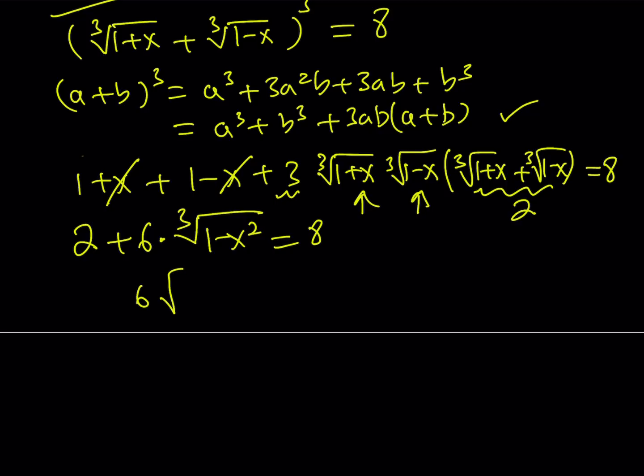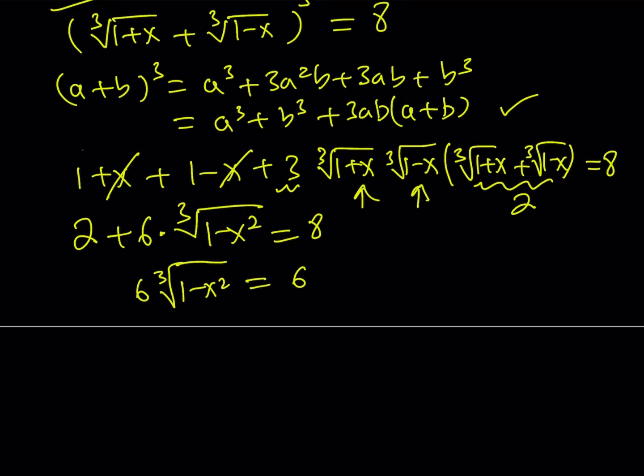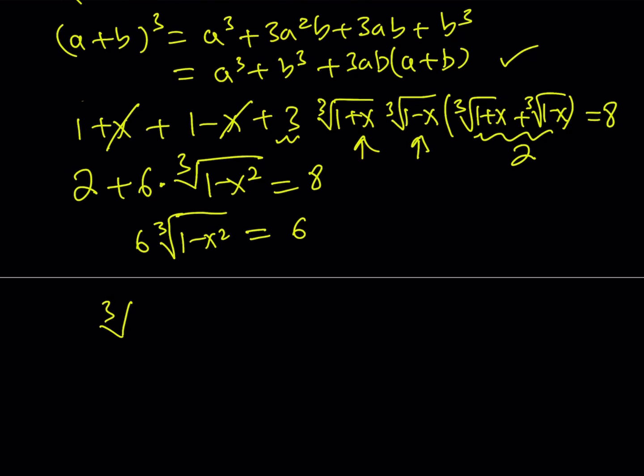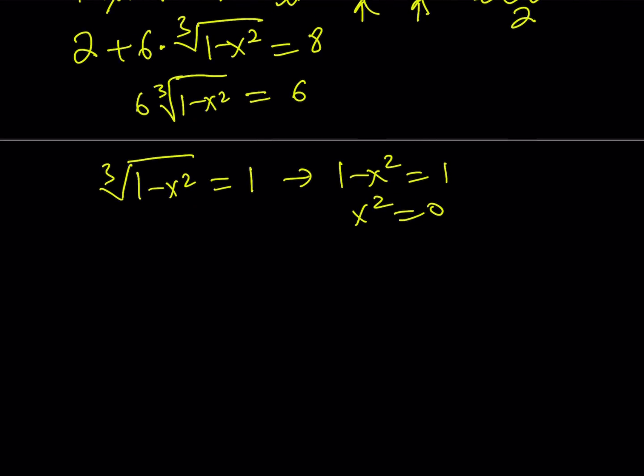Subtract 2 from both sides. You get 6 times the cube root of 1 minus x² is equal to 6. And if you divide both sides by 6, you get the cube root of 1 minus x² equals 1. If you cube both sides, you get 1 minus x² equals 1, and x² equals 0. And this gives us x equals 0 as the only solution.